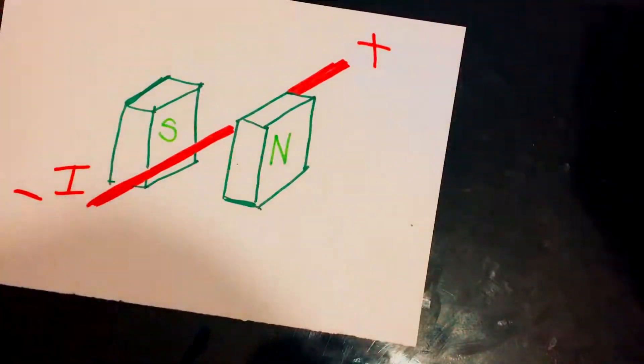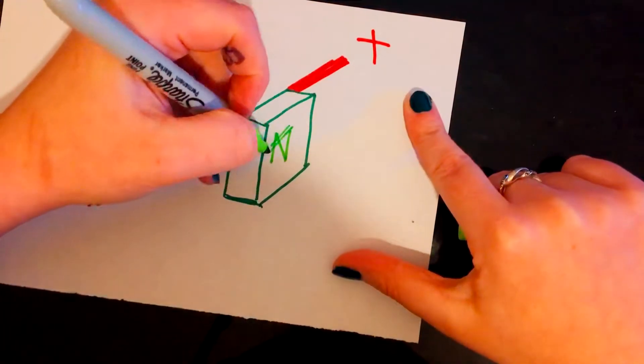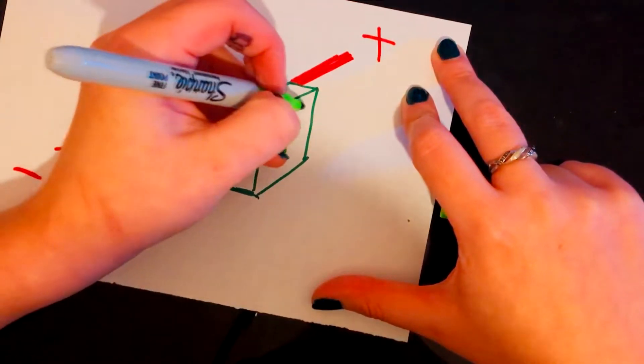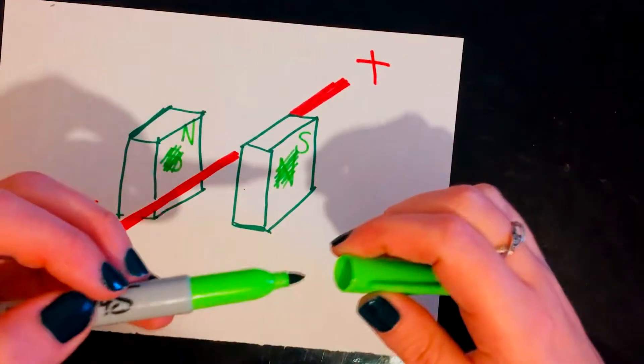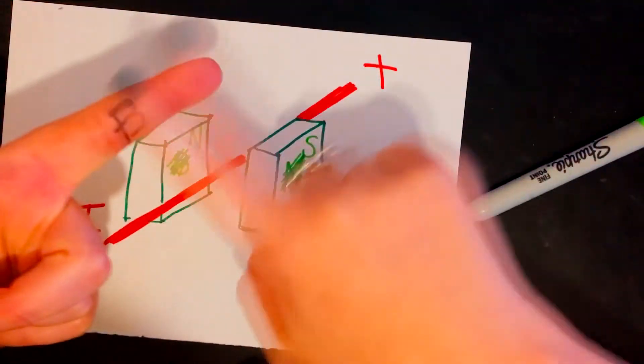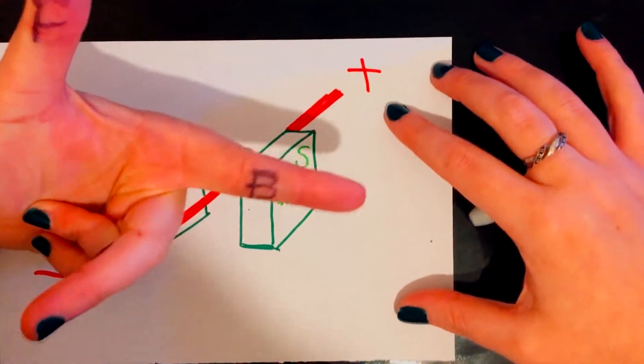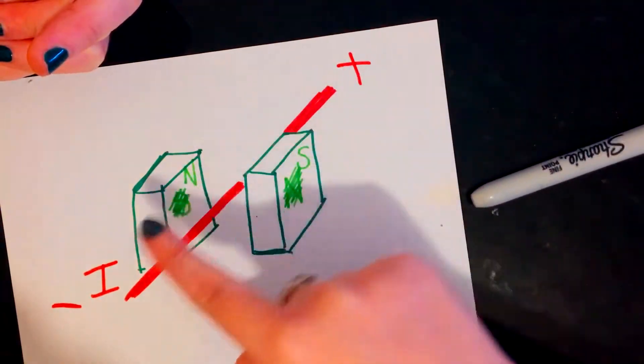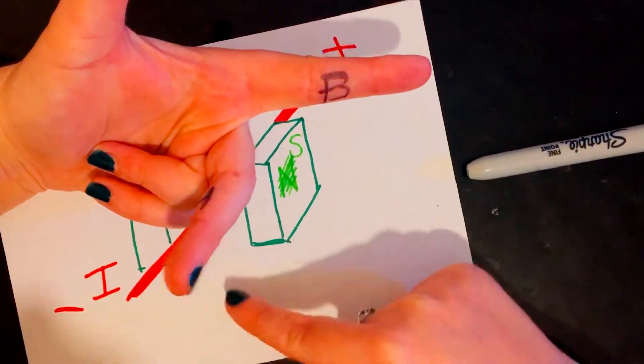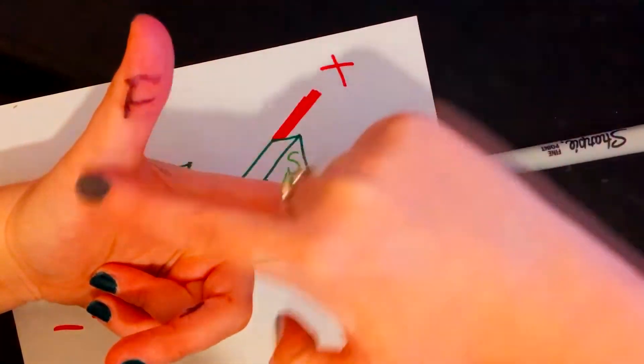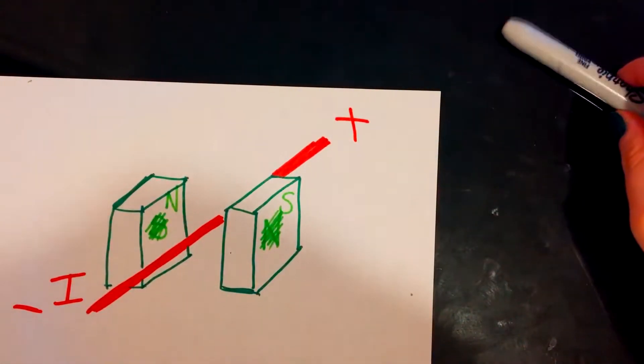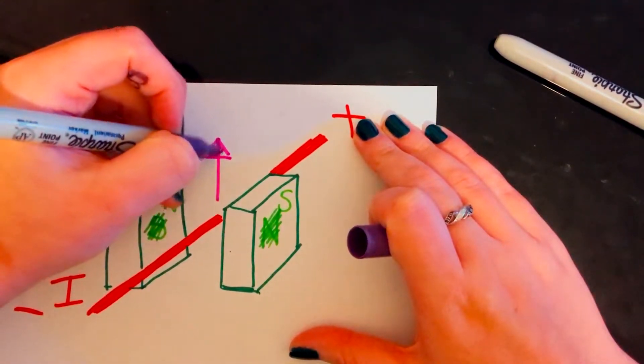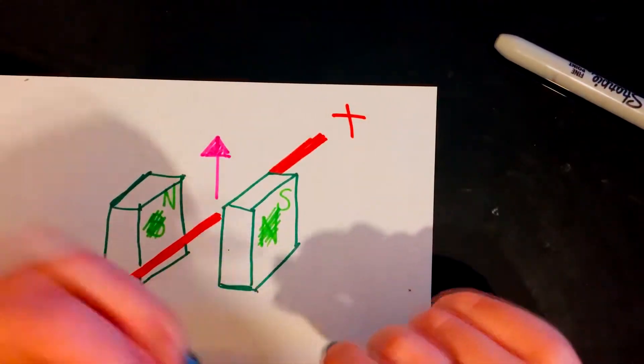If I imagine that instead of switching my poles, I kept that one as north and that one as south, like in the first example, first finger field, north to south, second finger is my current and it's coming from positive to negative, so it's coming outwards. Well look, now my force is going upwards. So it does have an impact which way round you do it.